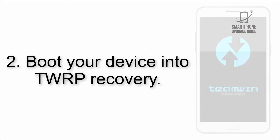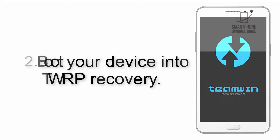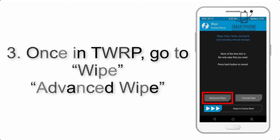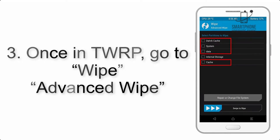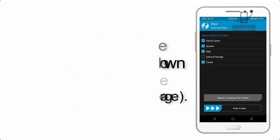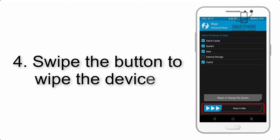Step 2: Boot your device into TWRP recovery. Once in TWRP, click on Wipe, then Advanced Wipe, and select the checkboxes as shown in the image, excluding internal storage.